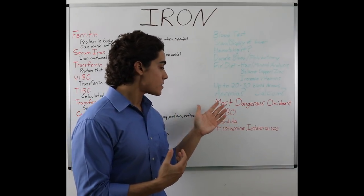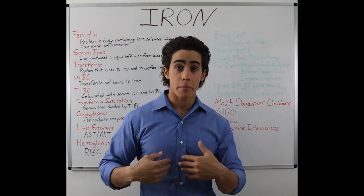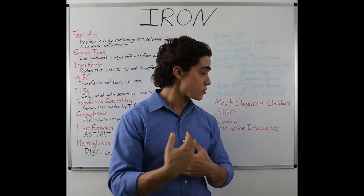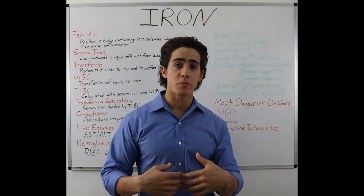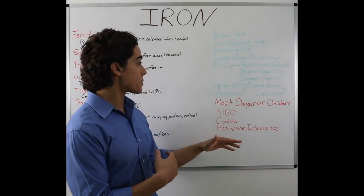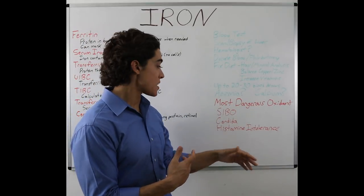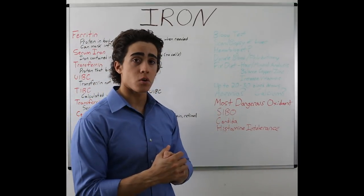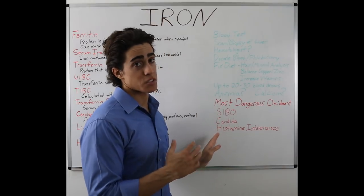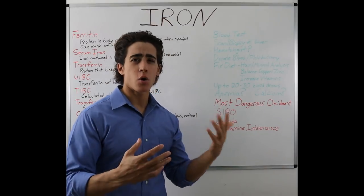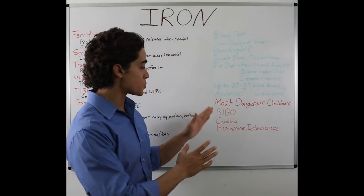In a way, the bacterial overgrowth is actually preventing you from being damaged by the metals, because the fungus grows using the metals and you then excrete that in your bowel movements. This makes things very complicated because despite doing all of these things, you then have to do an antimicrobial protocol — which is very difficult.